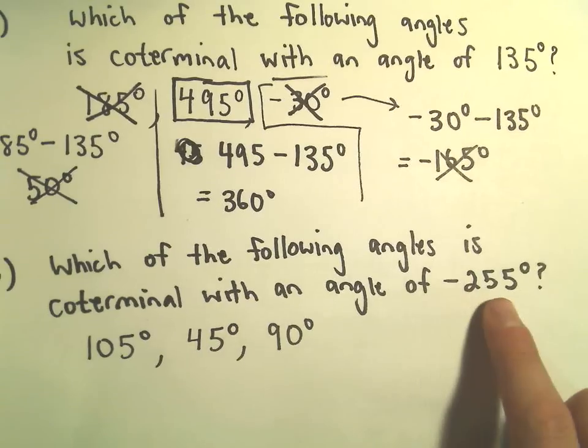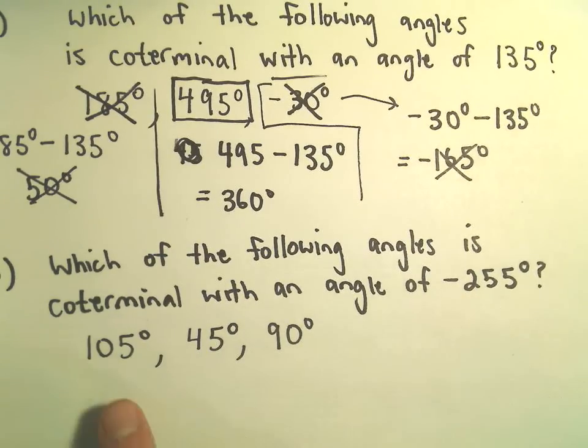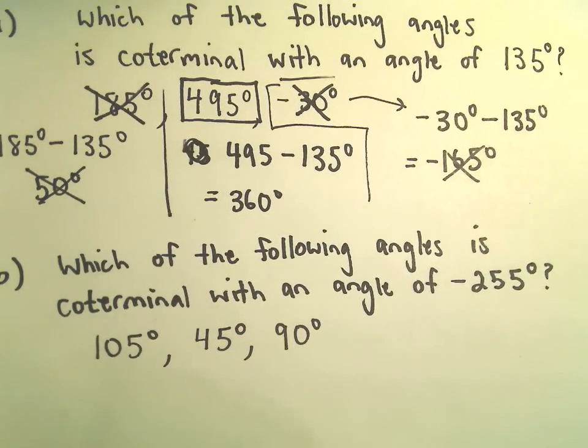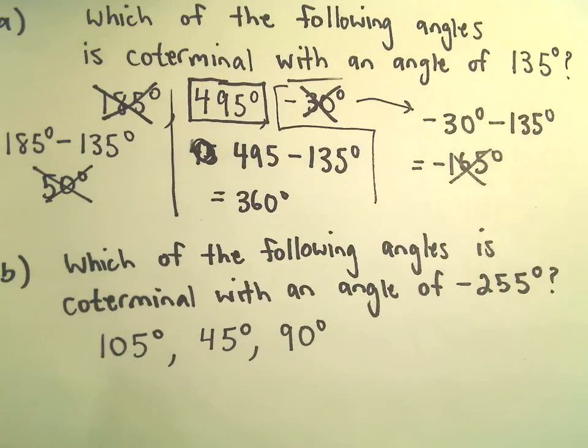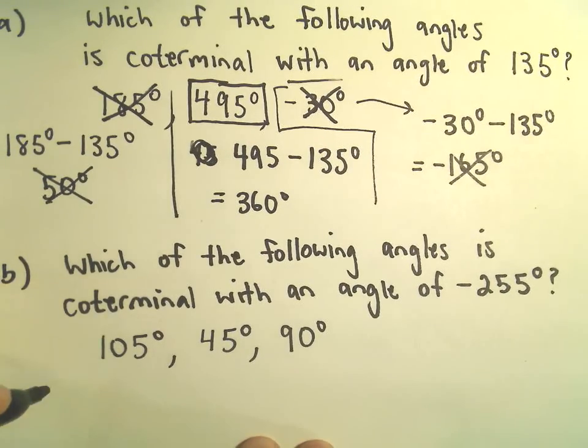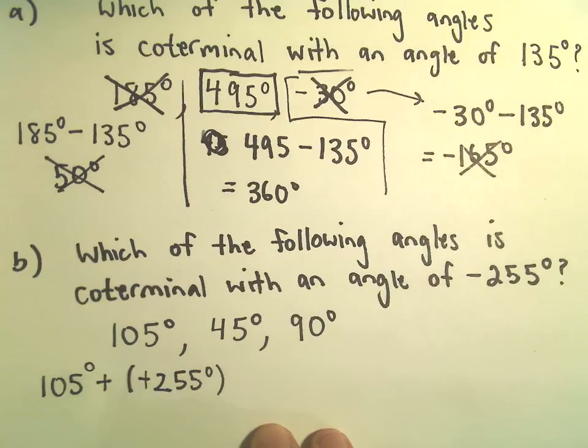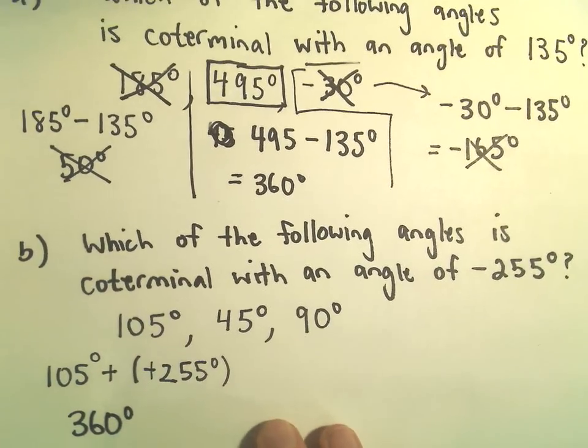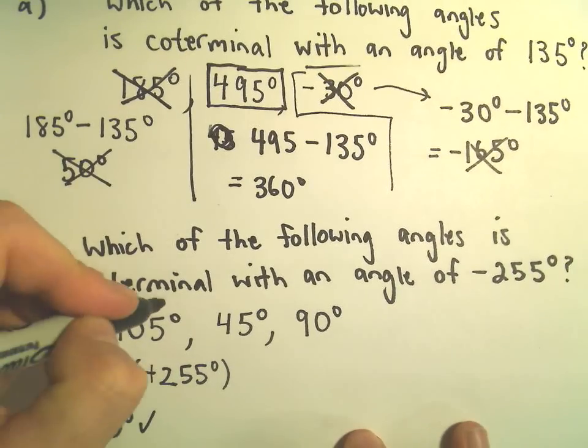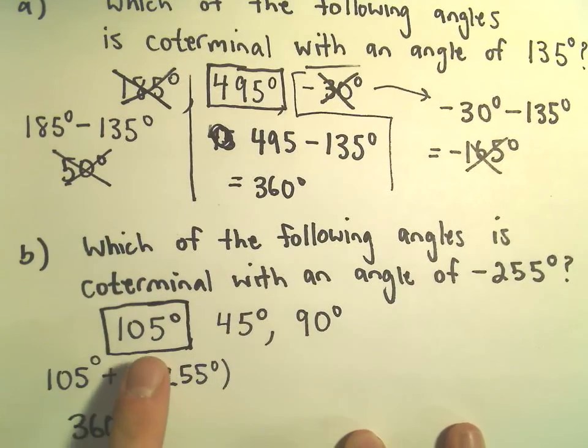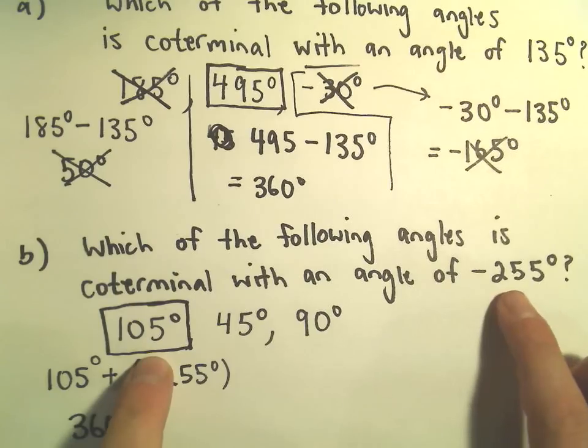Let's do one more. Suppose we have negative 255 degrees and we want to figure out of 105 degrees, 45 degrees, and 90 degrees, which one of these is coterminal? Well again, let's check 105. So if we take 105 degrees and subtract away negative 255 degrees, well since we're subtracting a negative that's going to make a positive. 105 degrees plus 255 degrees, that's going to give us 360 degrees. Again, certainly that's a multiple of 360, so 105 degrees is going to be an angle that's coterminal with negative 255.